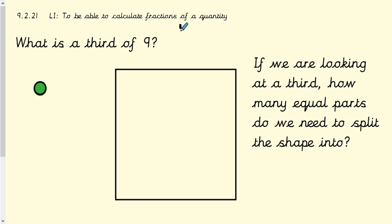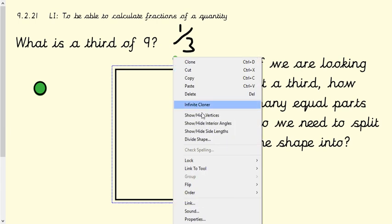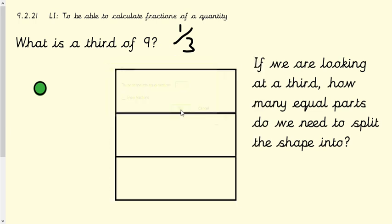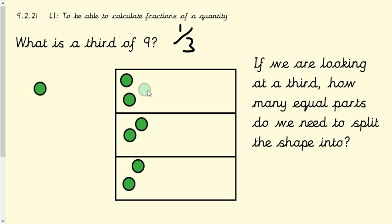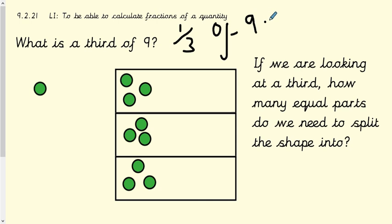What is a third of nine? Think about what a third looks like as a fraction — our denominator is three. So we're going to divide our shape into three equal parts, and then share out nine counters equally. It's really important that it's equal — if you put them all in one it's not a true representation of a third. So I've shared out my nine counters and we count how many are in one box. That is three. So one third of nine equals three.